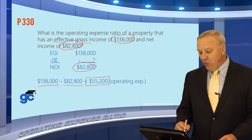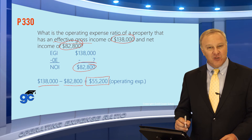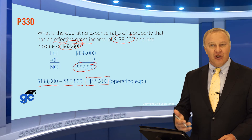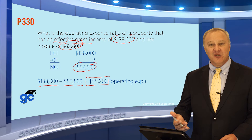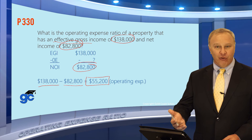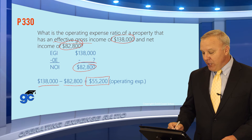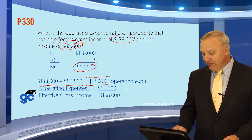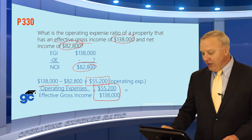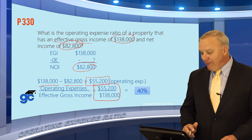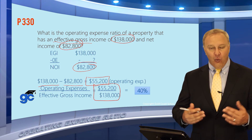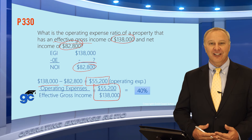The question asks: what is the operating expense ratio? The operating expense ratio is your operating expenses divided by your effective gross income. So in this case, we're going to take $55,200 and divide that by $138,000, and our operating expense ratio will be 40%.